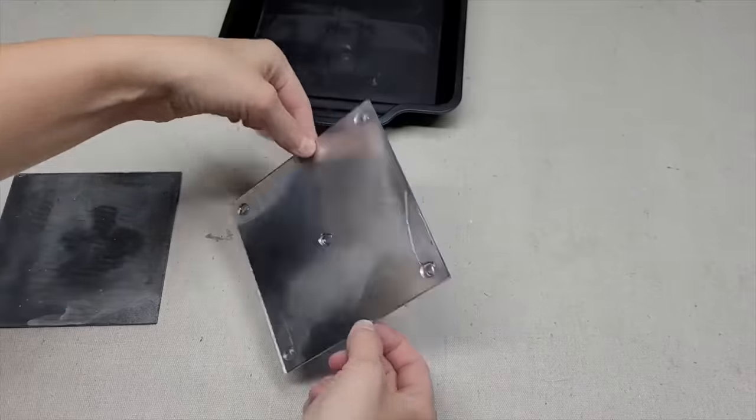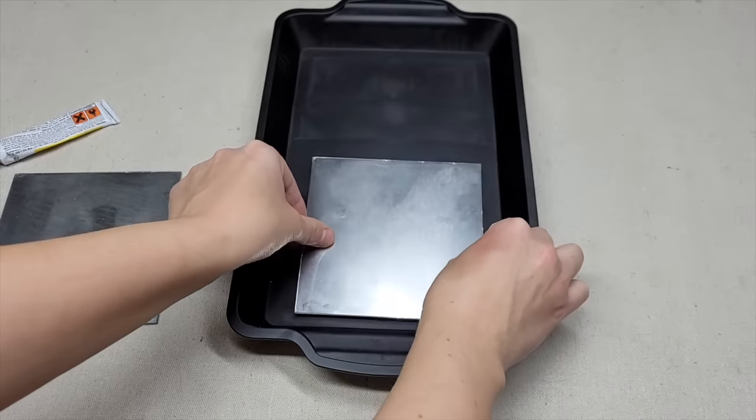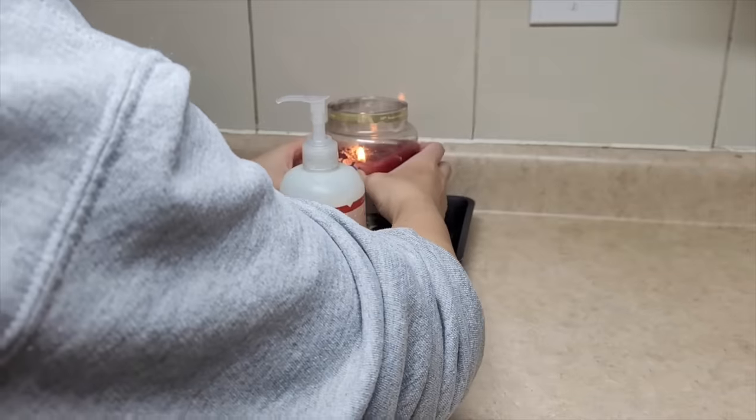Now we're going to take five different dots of this glue, put it on the corners, one in the center, and we can start to put some things onto it.